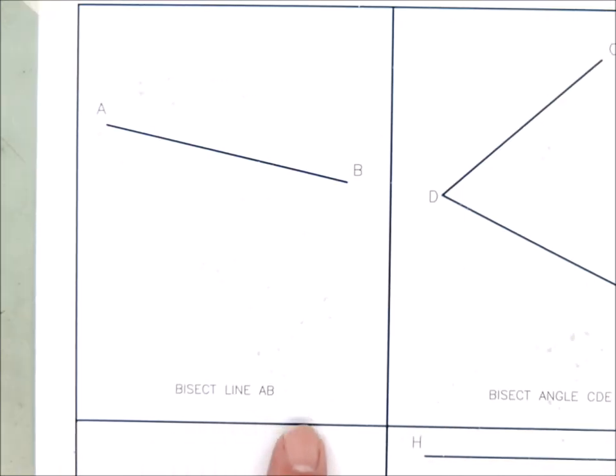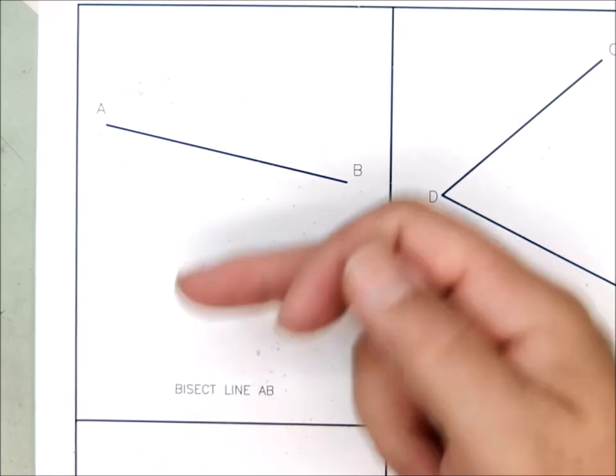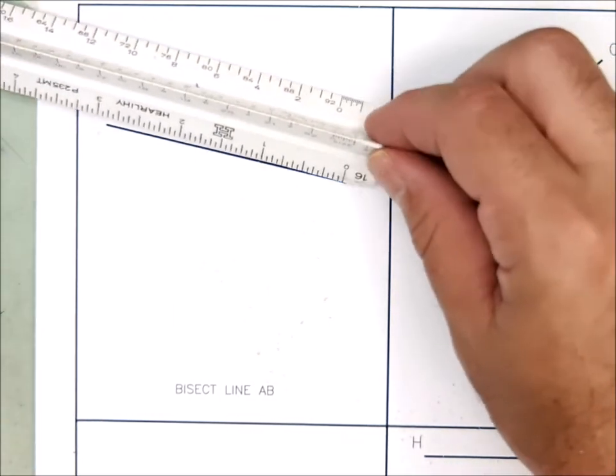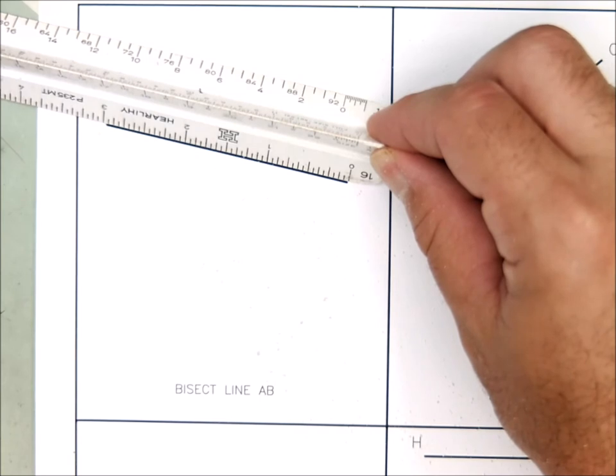Our first task is bisecting a line. Bisect means cut in half. And we have a line segment A to B and what we want to do is we want to find the midpoint and break that line into two equal parts. Now, of course, you might say, well, I could just measure it and then cut that number in half. And you know what? That's true, you could.